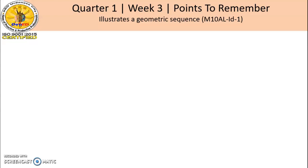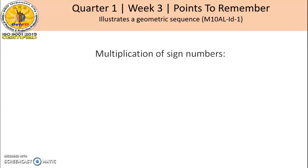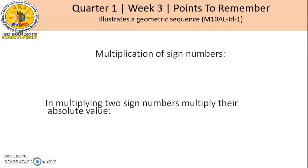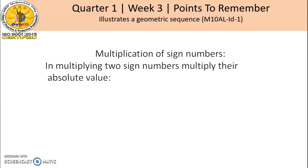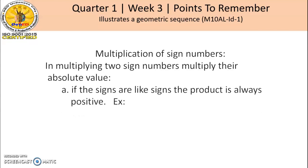Let us review first the multiplication and division of signed numbers. In multiplying two signed numbers, multiply their absolute value. If the signs are like signs, the product is always positive.